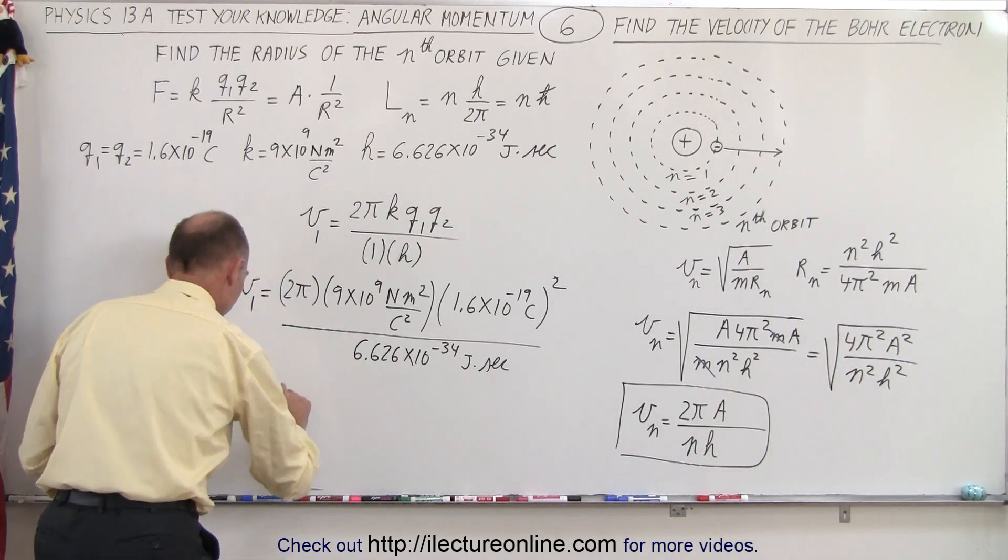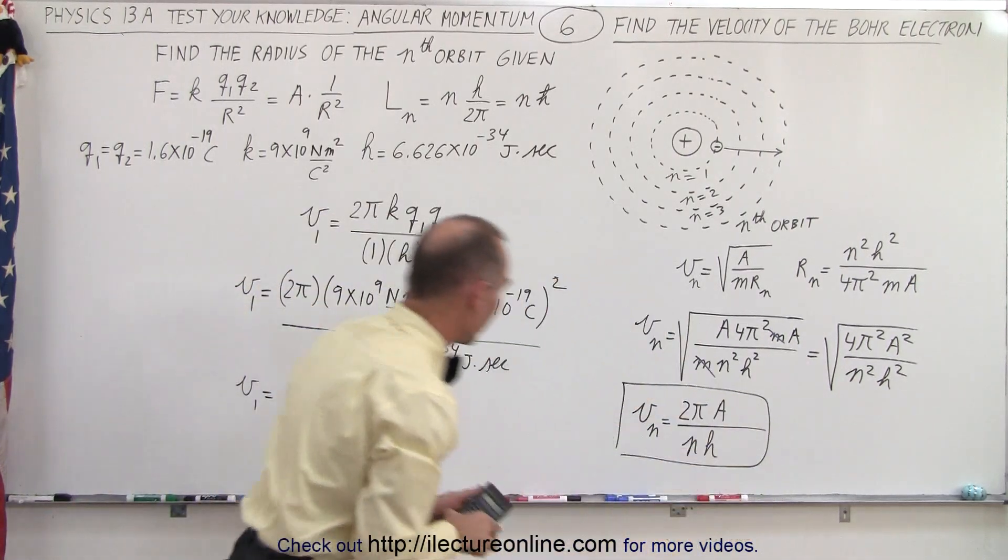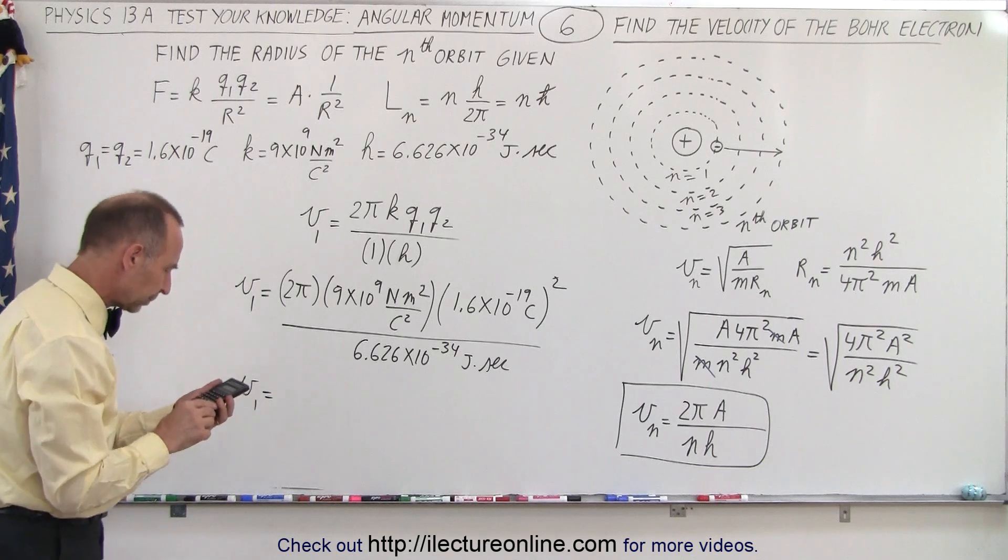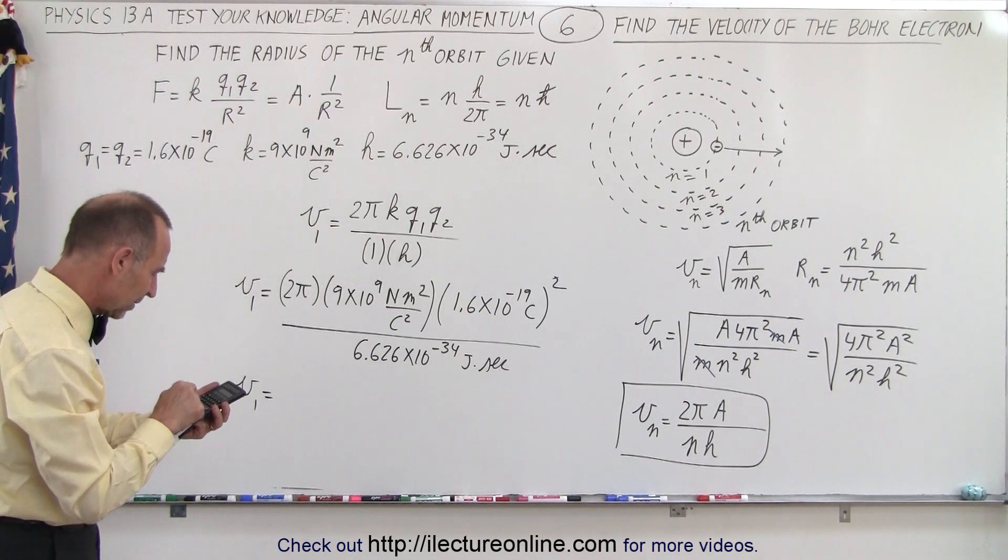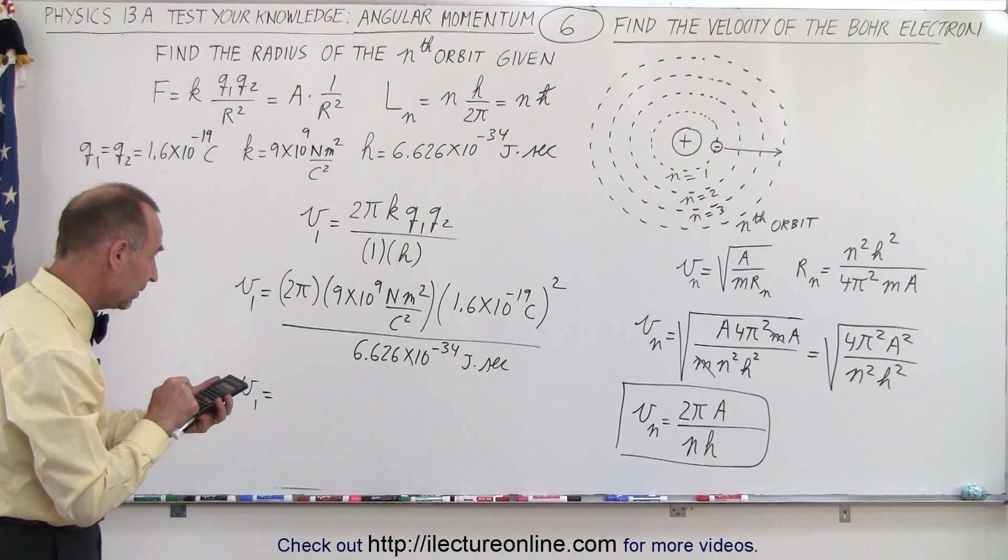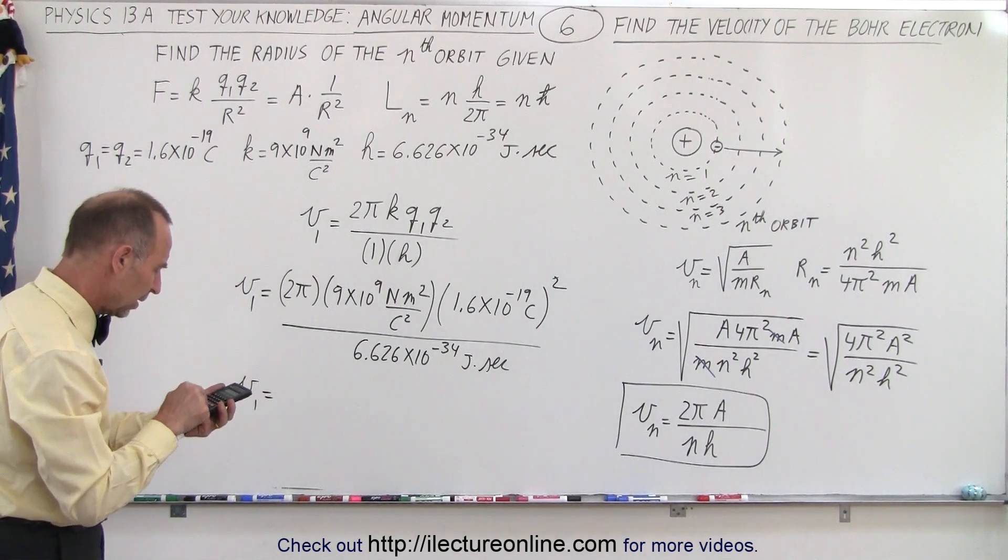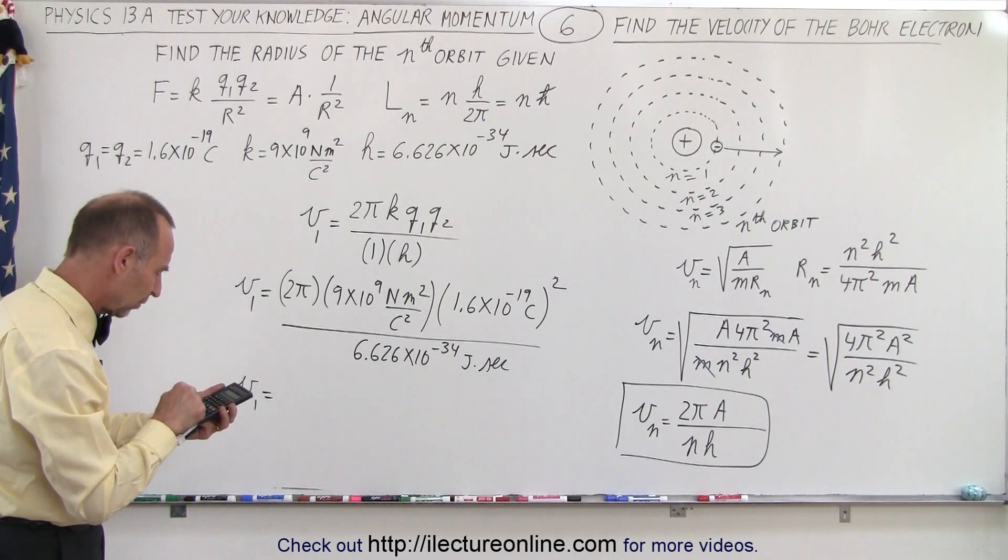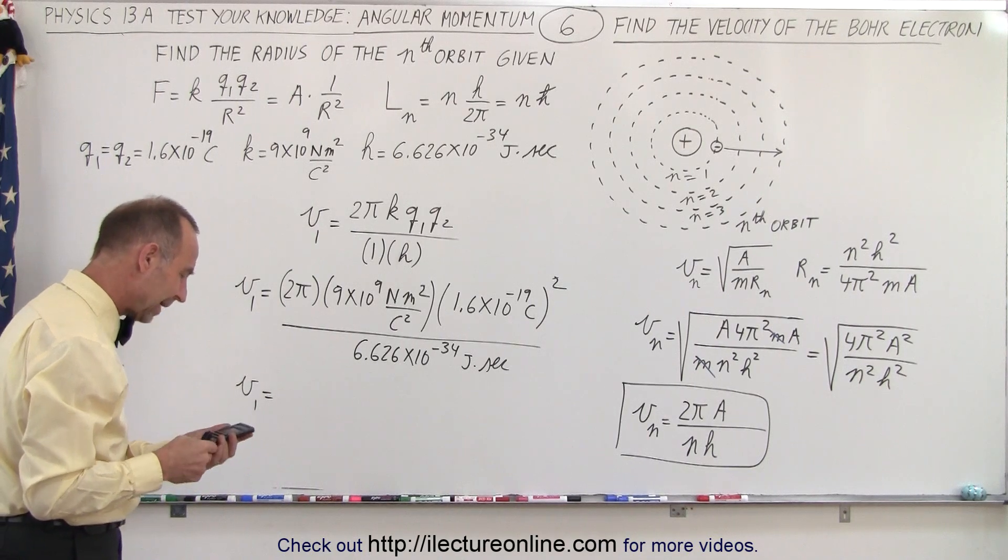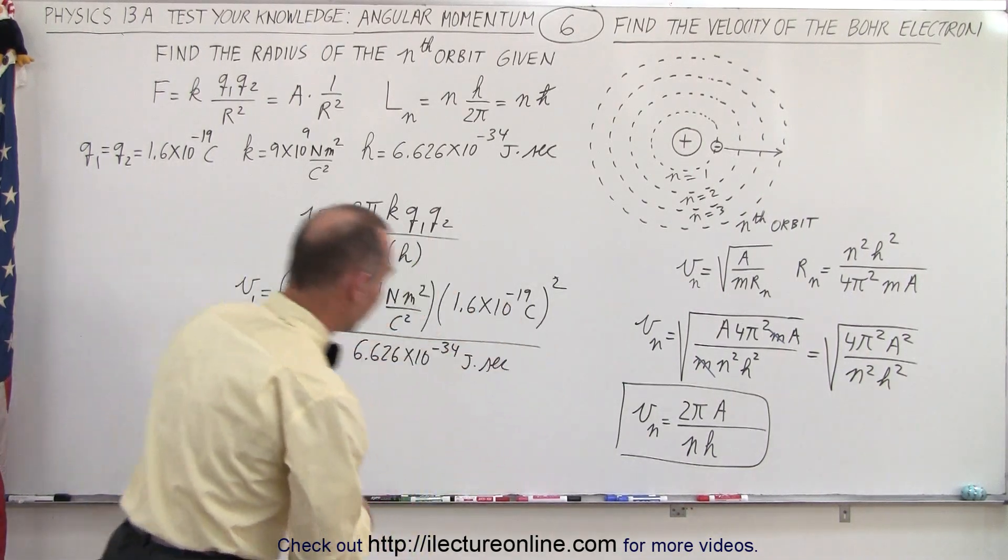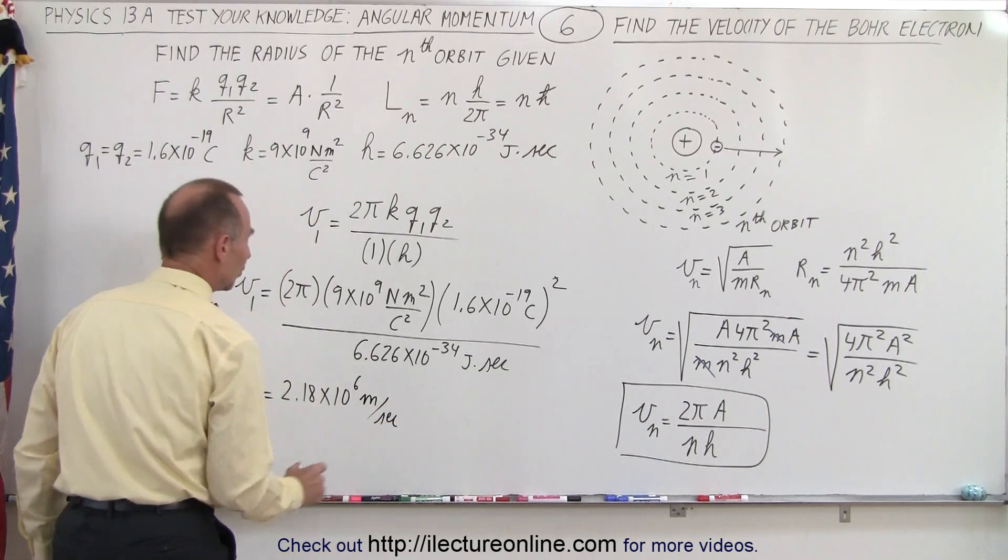So v1 is equal to, let's find out what the velocity is of an electron in the innermost orbit. So we get 2 times pi times 9e9 times 1.6e-19 squared divided by 6.626e-34 equals, that would be 2.18 times 10 to the 6th meters per second, which is